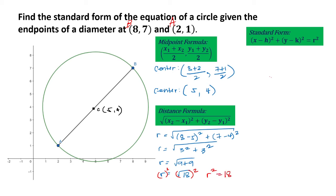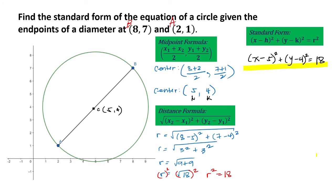To answer the question, the standard form of the equation of our given circle is (x minus 5) squared plus (y minus 4) squared is equal to 18. This is the standard form of the equation of our circle.